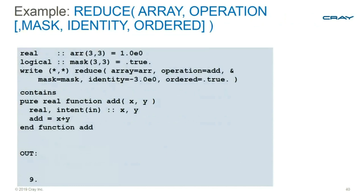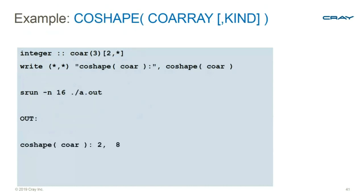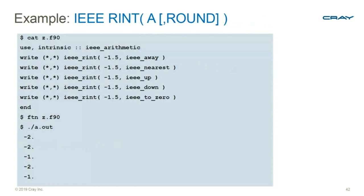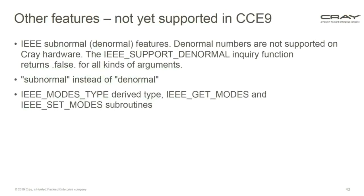The new reduce intrinsic takes an array argument with an optional mask and an operation function — a function that takes two arguments and returns their combination, for example addition. Co-shape was requested by David Henty: if you have a co-array declared with co-dimensions 2×*, running on 16 images gives a co-shape of [2, 8]. Enhancements to random number generation let you specify whether you want different random numbers each time you execute or, importantly, different sequences on each image — avoiding a thousand images all having the same random number sequence.